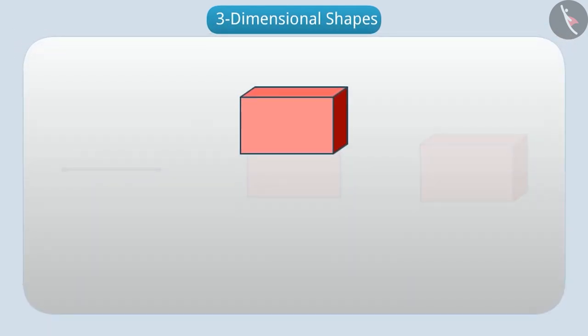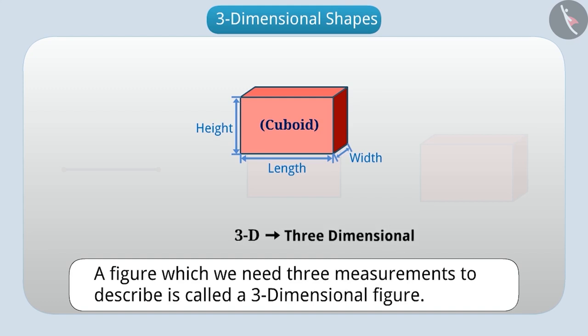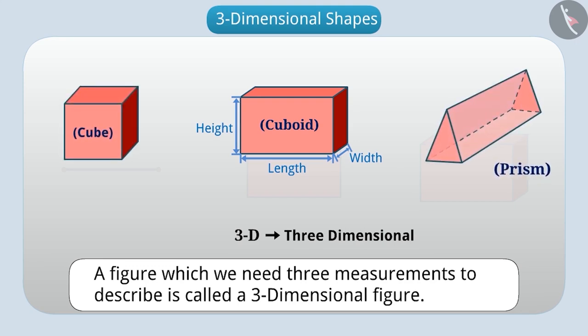So, can you now tell how many measurements are necessary to describe the third shape? Absolutely right! This shape is a cuboid. To describe it, we need to tell the measure of its length, height as well as width. A figure in which we need three measurements to describe is called a three-dimensional figure. In short, we write 3D for three-dimensional. Generally, all solid shapes such as cube, cuboid, prism, etc. are three-dimensional or 3D shapes. Let us know about three-dimensional or 3D shapes.